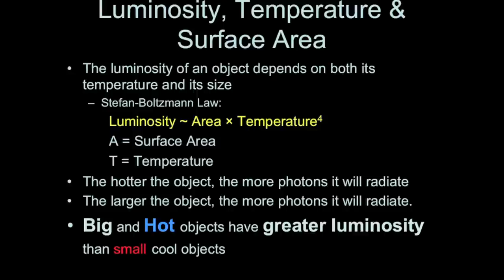The hotter an object is, the more energy it will radiate out, or the more photons it will give off. The larger the object, also, the more photons it will give off, and the more energy output it will have. Therefore, if we're talking about objects that have luminosity due to their temperature, big and hot objects have greater luminosity than small, cooler objects.